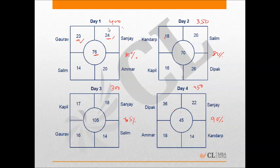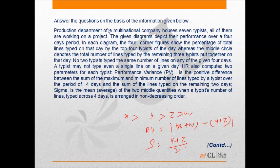It is also given that no two typists typed the same number of lines on any of the given four days. This means if a particular typist typed X number of lines on a particular day, no other typist typed that many lines on that day. A typist may type even zero lines on a given day. Two parameters are also computed for each typist: Performance Variance (PV) is the positive difference between the sum of the maximum and minimum number of lines typed by a typist over a period of four days.